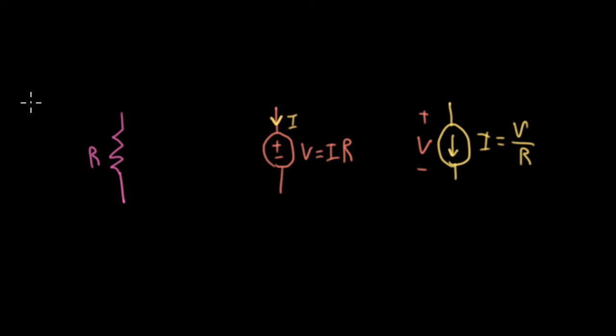But on the other hand, you can think about driving the resistor with a current source, say the load resistor in a BJT amplifier, where you've hooked the resistor to the collector. Well, in that case, it's more natural to think about the resistor as a current-controlled voltage source.